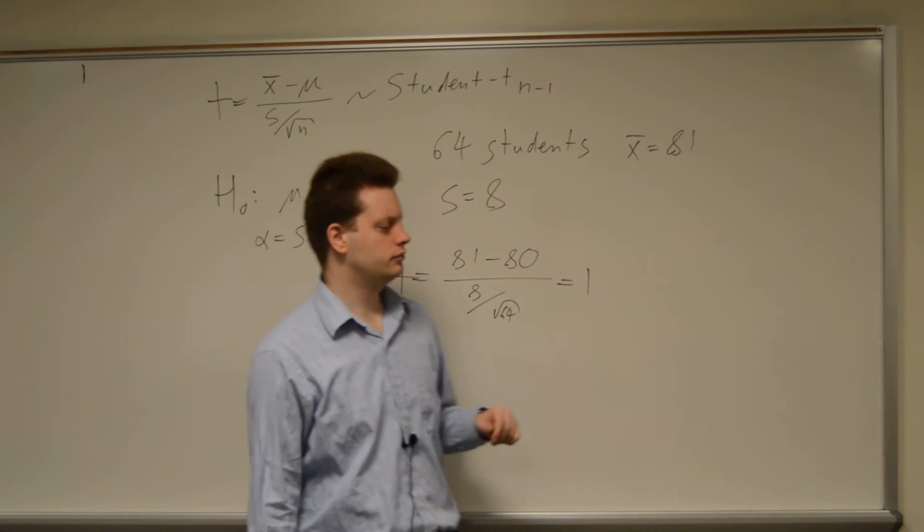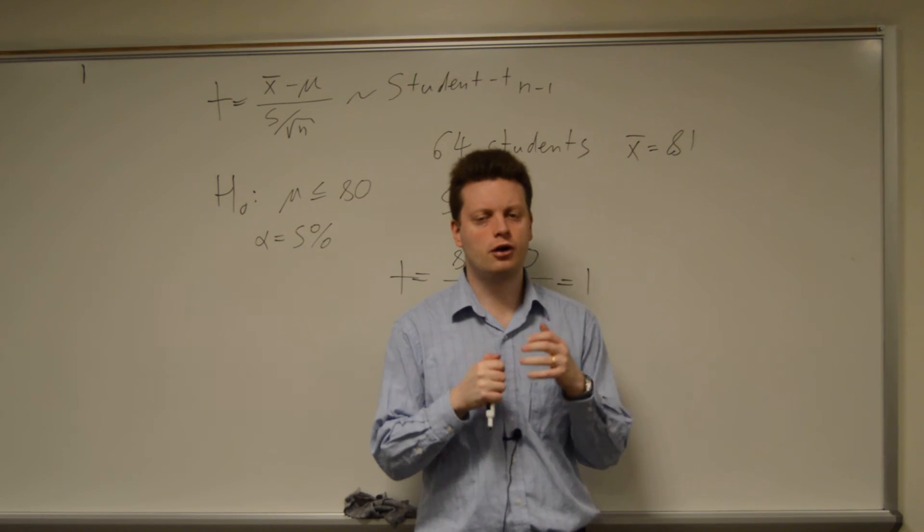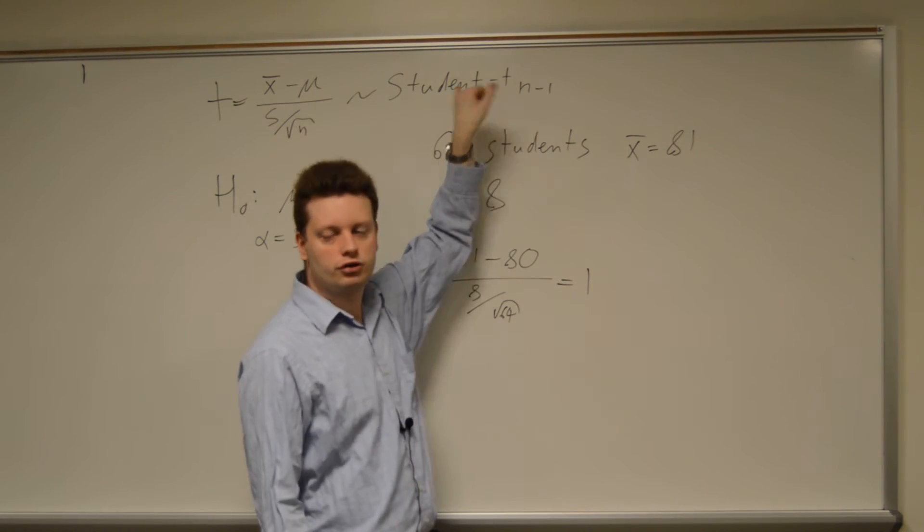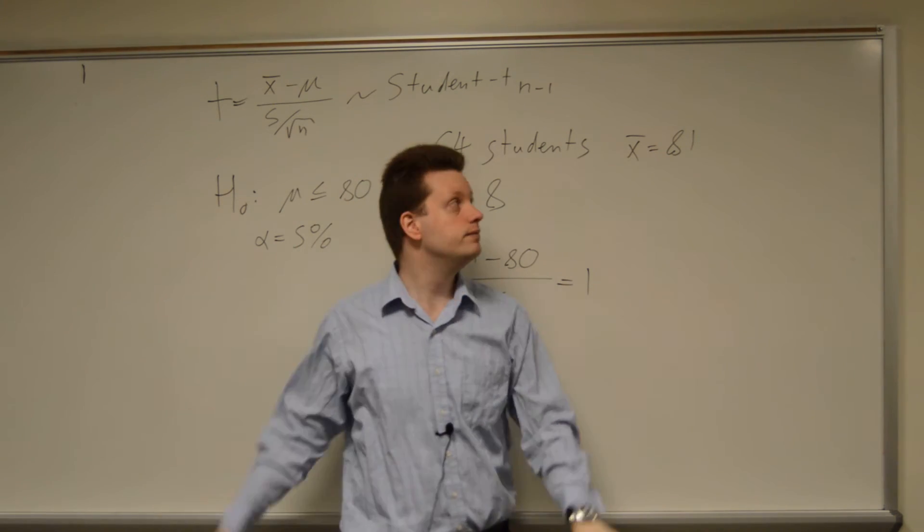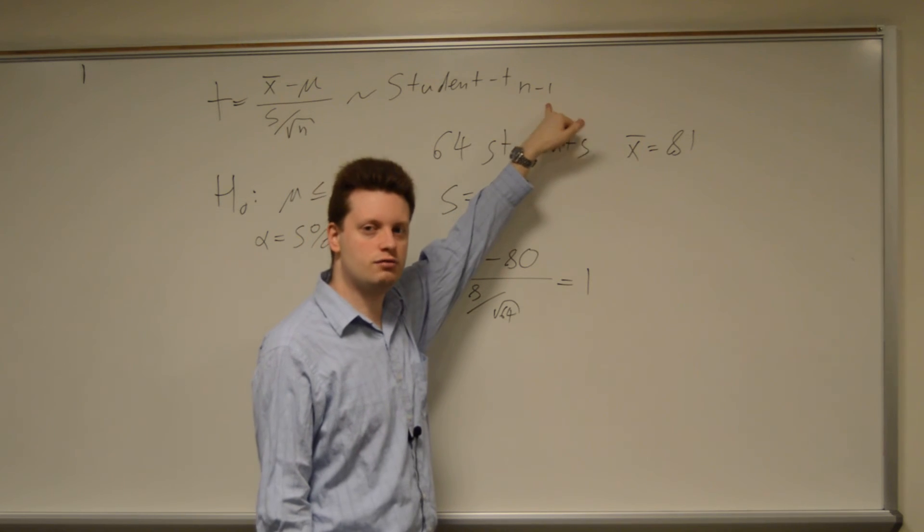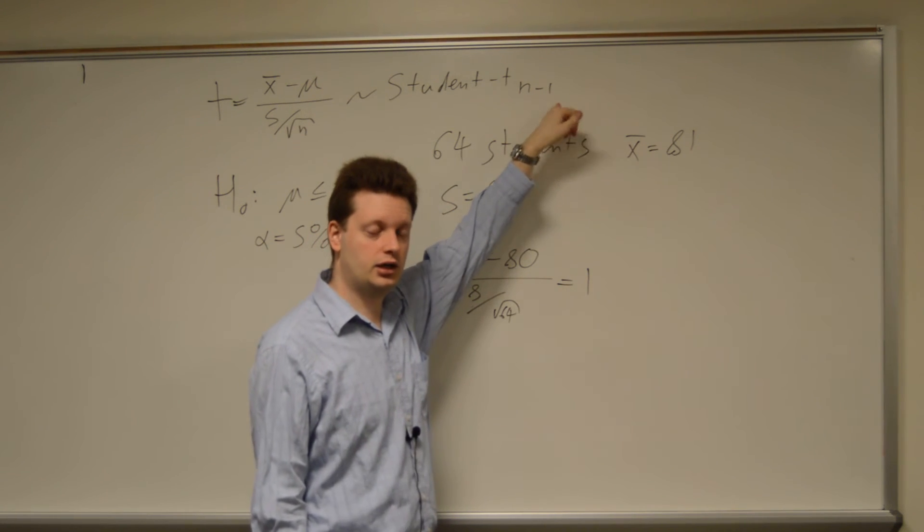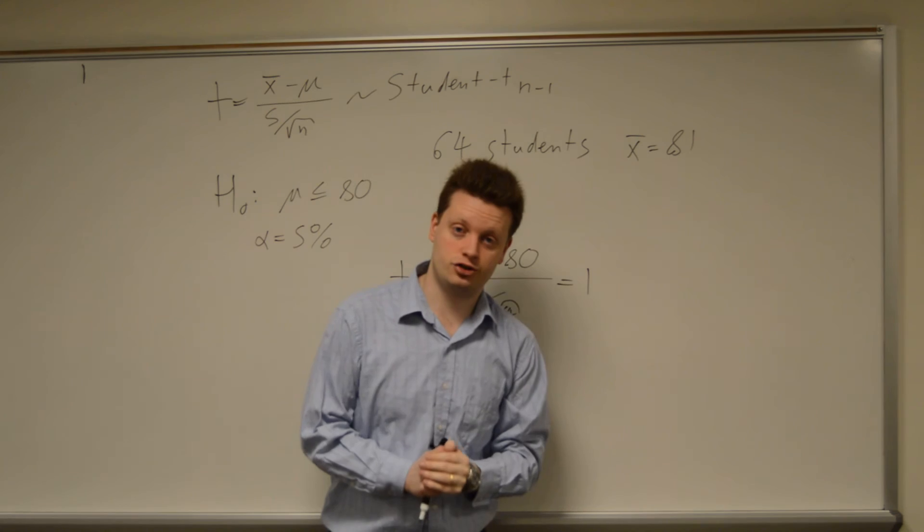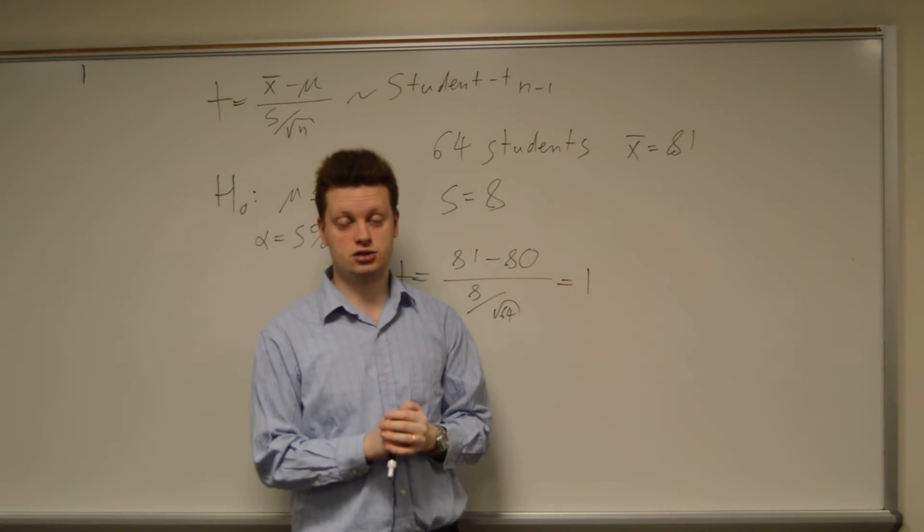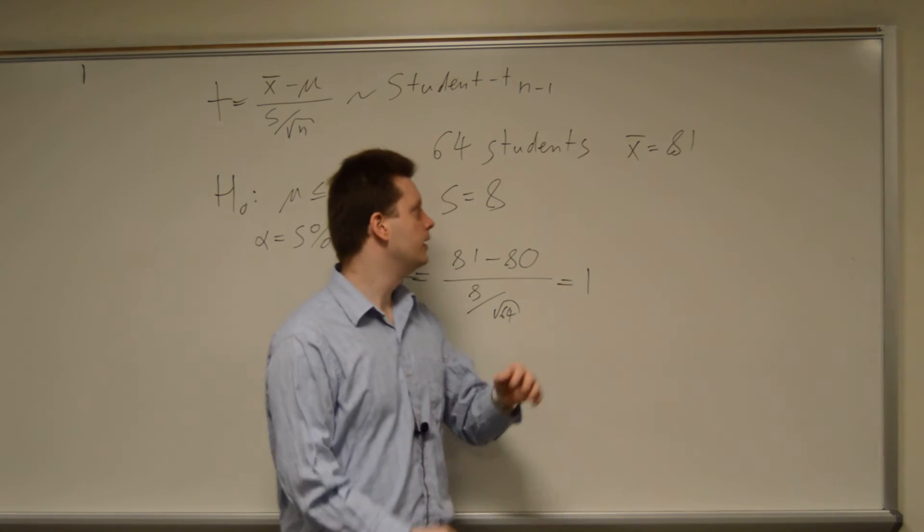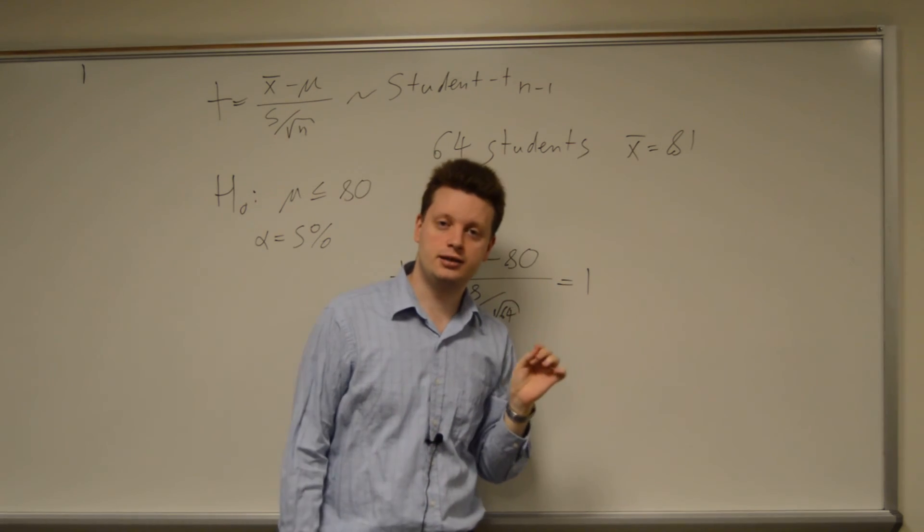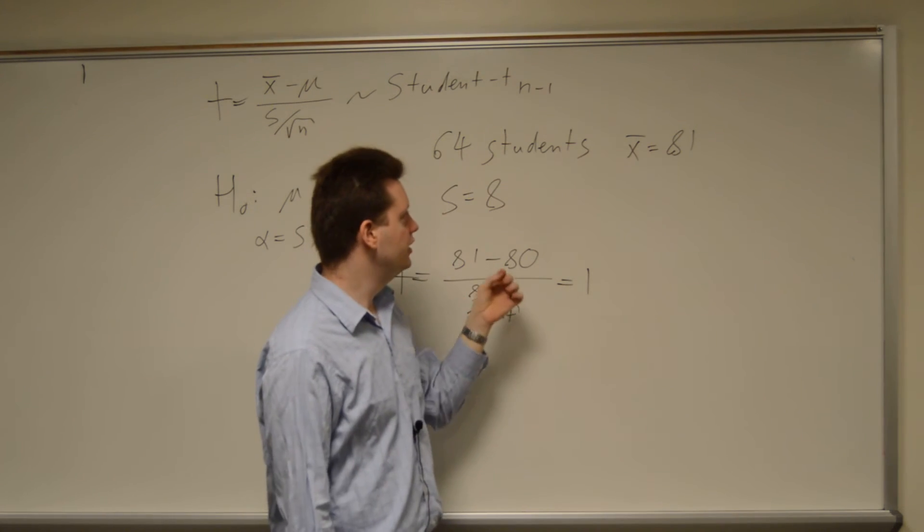Now we have this value. Now we need to compare that value to the threshold alpha 5% at the student t-distribution with n minus 1 degrees of freedom or 63 degrees of freedom. There is actually a simplification to this.